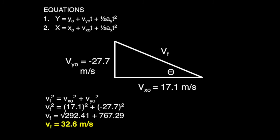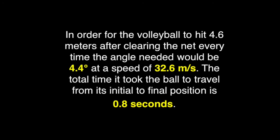To sum up the whole problem, in order for the volleyball to hit 4.6 meters after clearing the net every time, the angle needed would be 4.4 degrees at a speed of 32.6 meters per second.